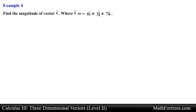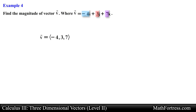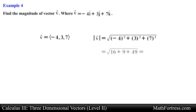Find the magnitude of vector v, where v equals -4i + 3j + 7k. Here we have a vector written using the standard unit vectors. Recall that this form is very similar to the component form of a vector, where each scalar represents the x, y, and z components respectively. To find the magnitude we simply use the Pythagorean theorem in three dimensions. Doing that and simplifying, we obtain the square root of 74 as the final answer.